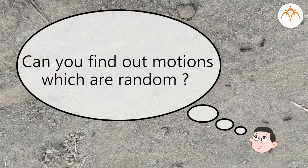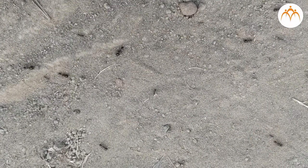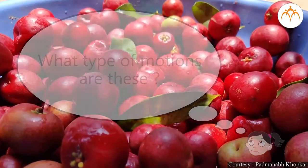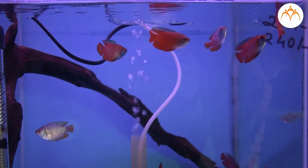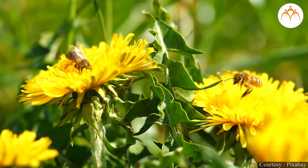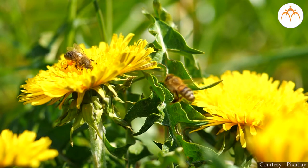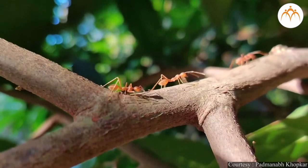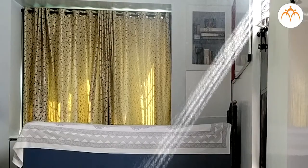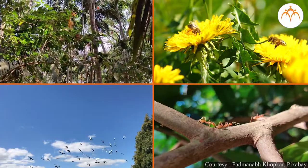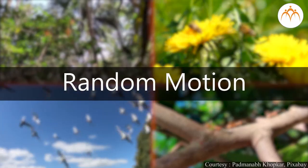Can you find out motions which are random? Let me show you another set of motions. Movement of fish in water, bird flying, butterflies, honey bee moving from one flower to another in search of nectar, ants moving around, dust particles in the room — it seems all are moving randomly. This type of motion is called random motion.